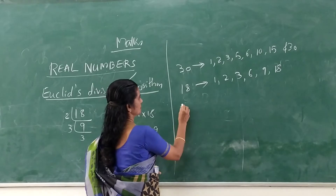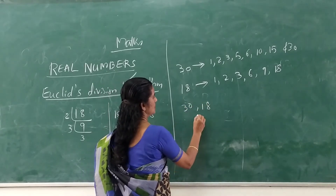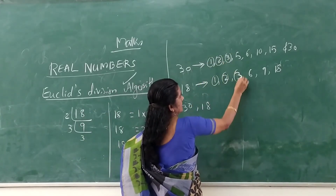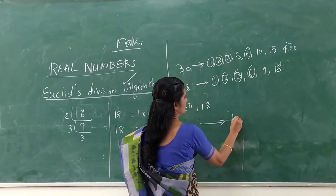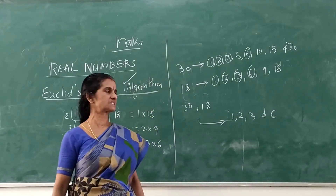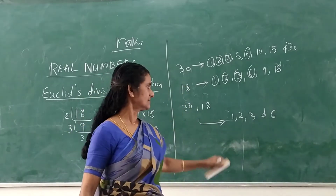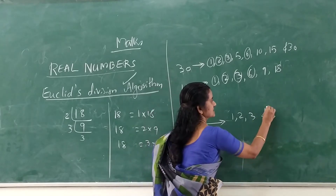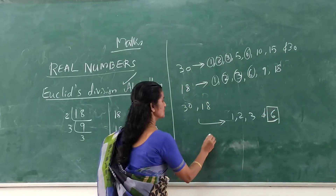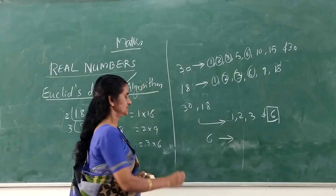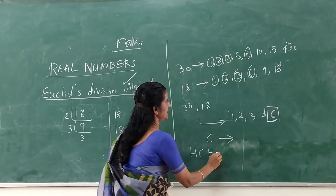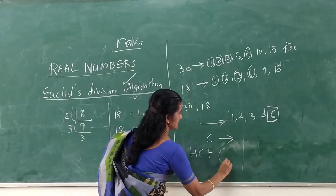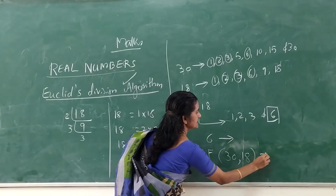So the common factors of 30 and 18 are 1, 2, 3, and 6. These are the common factors of 30 and 18. The highest of these factors is 6. So 6 is the Highest Common Factor — HCF. Therefore, HCF of 30 and 18 is equal to 6. This is by factorization.